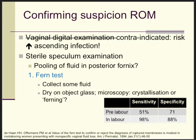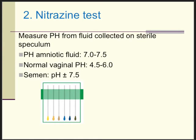A study from the Netherlands showed that the sensitivity and specificity of the ferning test in labor is quite good, in contrast to the pre-labor situation. Another test we can do is to take a little bit of fluid and measure the pH. If the pH is between 7 and 7.5, that confirms the suspicion of amniotic fluid. A normal vaginal pH is lower — slightly acidic. By the way, after sexual intercourse the pH test is not very reliable, because semen pH is also slightly alkaline. But overall, if done carefully, it's not a bad test at all, and very affordable.